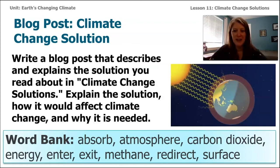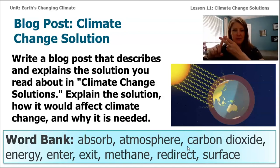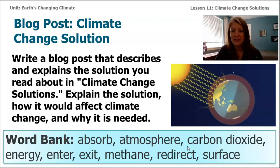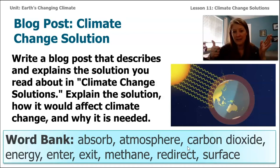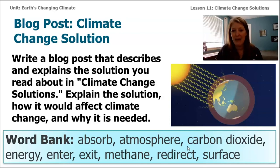I want to help you prepare to write this post. The directions are: write a blog post that describes and explains the solution you read about in the Climate Change Solutions article, then explain the solution, how it would affect climate change, and why it is needed. I've included a word bank because using all of these words in your explanation will really help your community understand the problem and how the solution can help fix it. The words are: absorb, atmosphere, carbon dioxide, energy, enter, exit — think about explaining energy entering or exiting Earth's system — methane, redirect, and surface. If your solution only focuses on carbon dioxide, you don't need to use the word methane, or vice versa, but you should try to include all the other words.